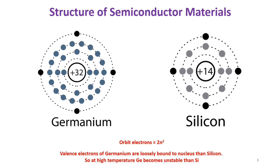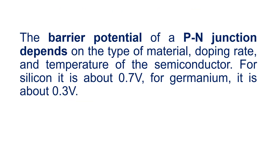Because germanium is loosely bounded to the nucleus, a very small amount of energy is needed to extract its valence electrons. Also, at high temperatures germanium becomes unstable compared to silicon — that is why silicon is used in most applications. Additionally, the barrier potential of a p-n junction depends on the material, doping rate, and temperature. Silicon has a higher barrier potential of 0.7 V compared to germanium's 0.3 V.